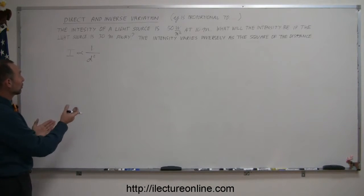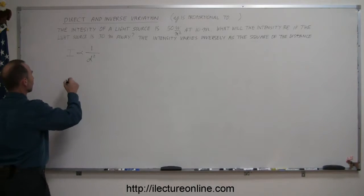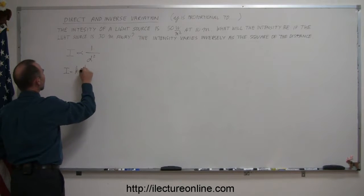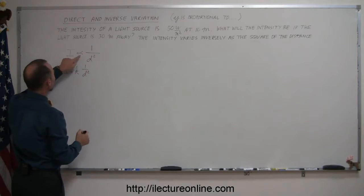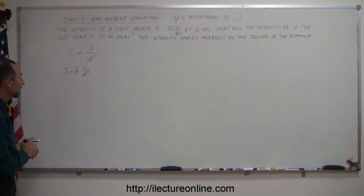Now we're going to change it into an equation. We're going to add a constant of proportionality, so we can now write that I is equal to k times 1 over distance squared. So to change this into an equal sign, you have to multiply the right side by k. And now the question is, what is k equal to?